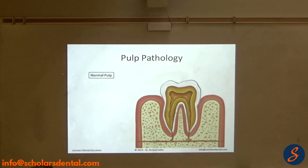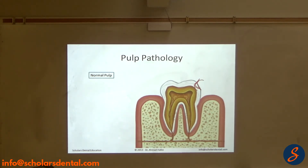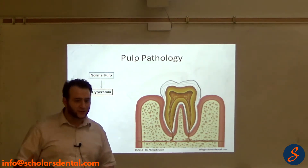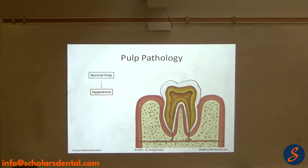So you have a normal pulp, and if the decay starts and gets deeper, slowly the pulp starts to react to that and brings more blood into the pulp, and we call that congestion or hyperemia — so an increase of the blood supply to the pulp. That's called hyperemia or congestion.